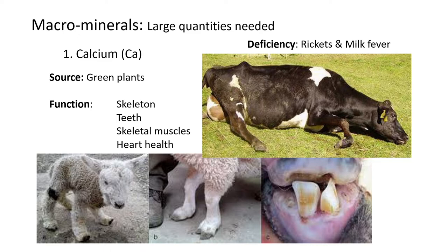Sometimes milk fever can occur. Like this cow, it can't move. Milk fever affects the muscles and also the nervous system. It's called milk fever because we need calcium in milk, and these cows do not have enough calcium in their milk. Usually the udder becomes swollen and very tender, and they get physical fever with flu-like symptoms from the fact that they don't have enough calcium. They also have a high temperature.